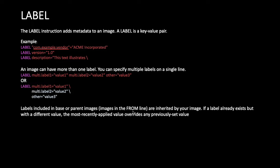LABEL instructions from the base or parent image specified in the FROM line are inherited by your image. If a label already exists but with a different value, the most recently applied value overrides any previously set value. So if your base image has a 'version' label and you redefine it, your image's value will overwrite the inherited one.